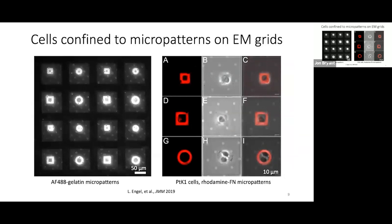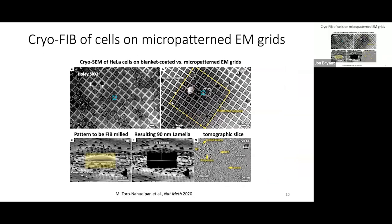In our first paper, we showed that maskless photopatterned grids are viable cell culture substrates that promote cell growth and can confine cell spreading to within the boundary of an ECM micropattern. Julia Mahamid's lab, in collaboration with Manuel Théry's lab, applied EM grid micropatterning to improve the cryo-focused ion beam milling pipeline. They compared cells plated on EM grids with blanket ECM coating versus grids with ECM micropatterns, and found that without the micropatterns only a small fraction of cells are optimally positioned for cryo-FIB — centered on the grid squares — whereas micropatterns give a higher yield of optimally positioned cells.